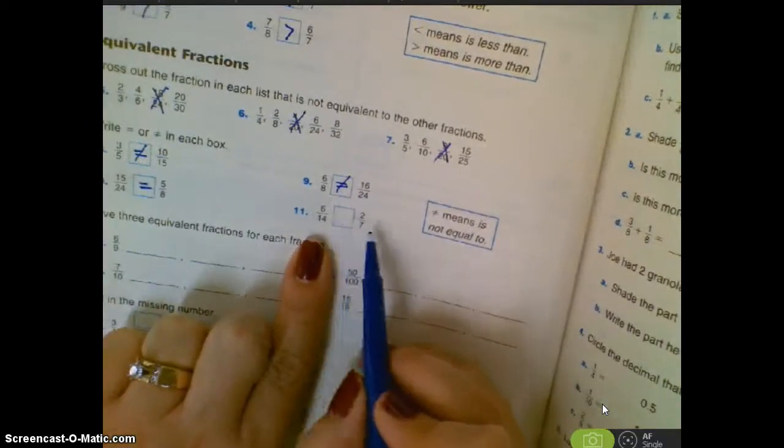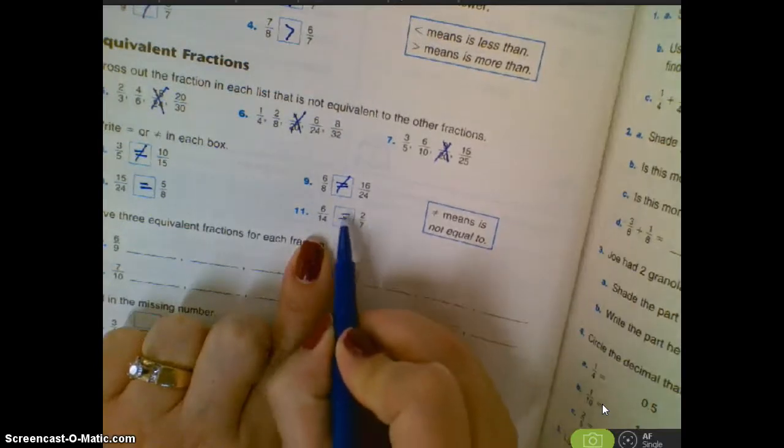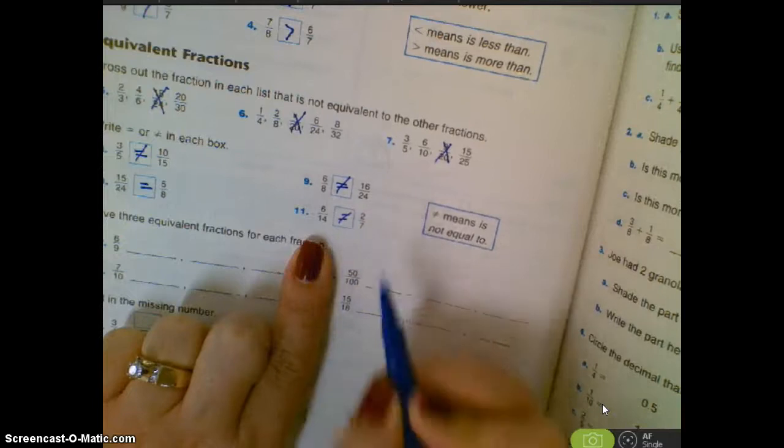14 divided by two is 7. Six divided by two is not 3, is not, would be 3, is not 2. Good.